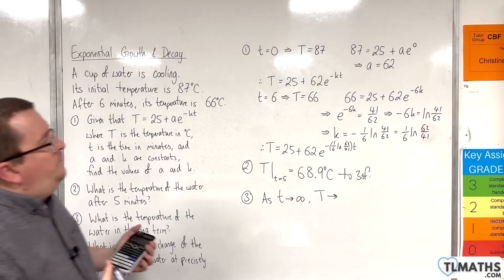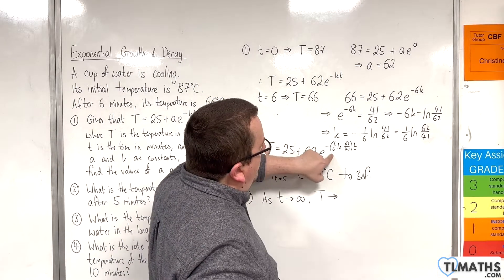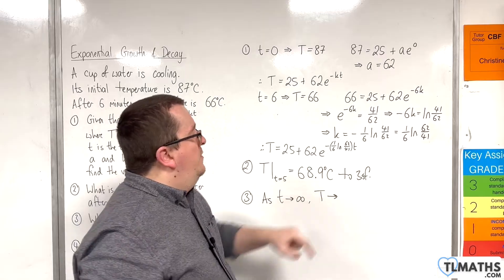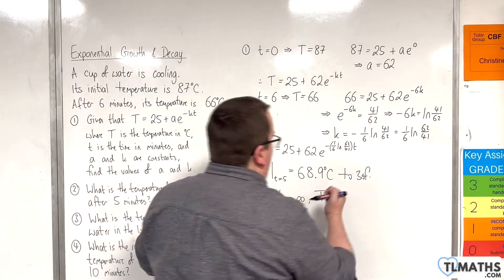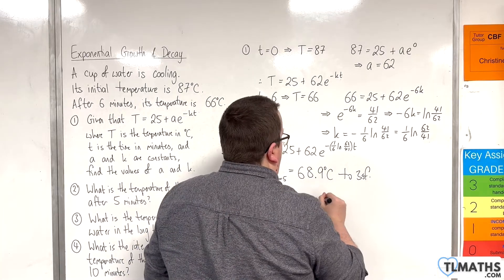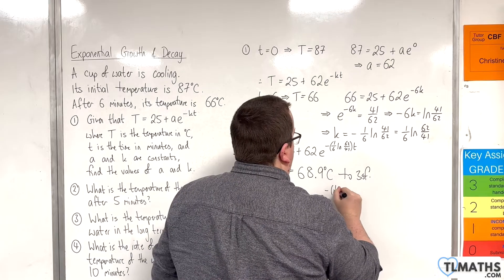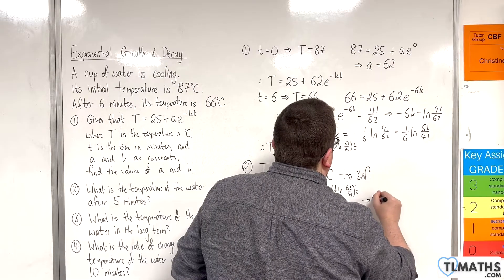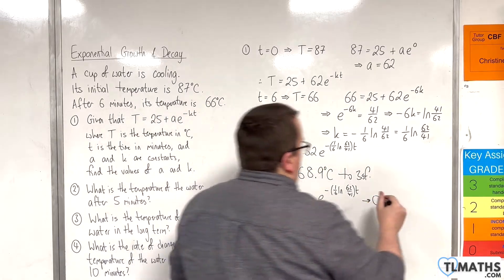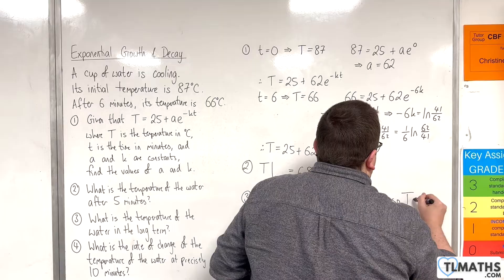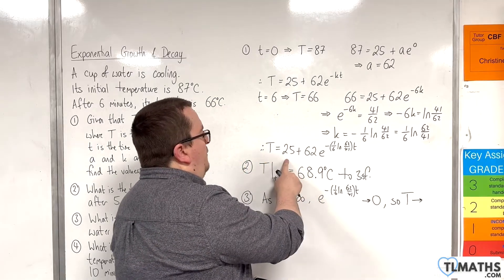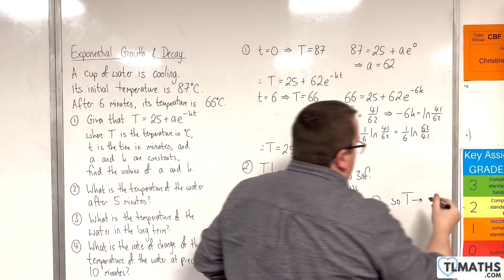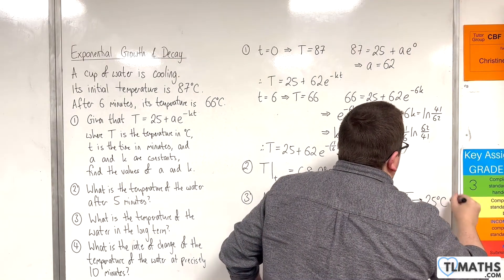then our E to the minus 1 sixth log of 62 over 41, times T, that will tend to 0. So let's write that as well. So the E to the minus 1 sixth natural log of 62 over 41, times T, that tends to 0. So capital T will tend towards 25 plus 62 times something that's tending towards 0. So that's just going to be 25 degrees centigrade.